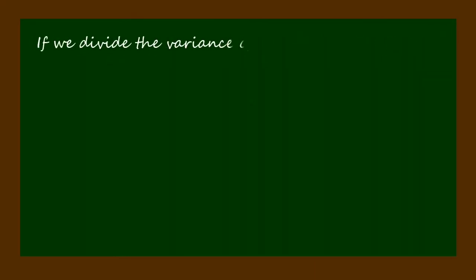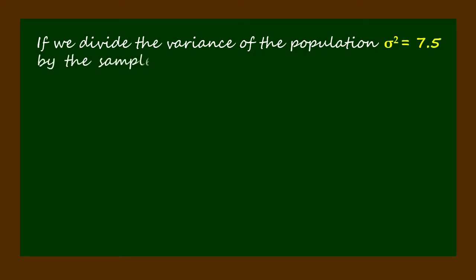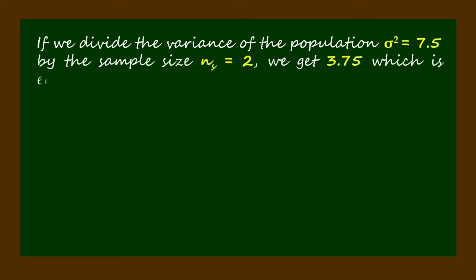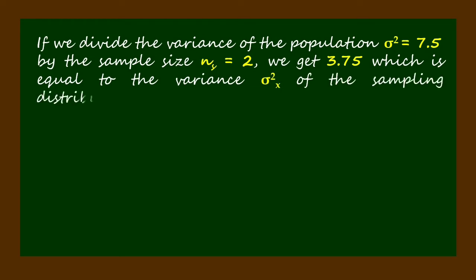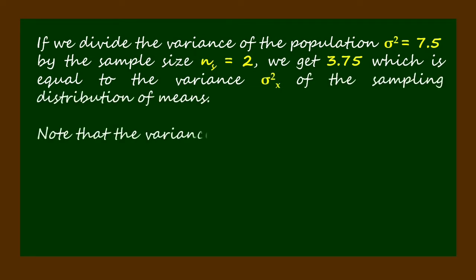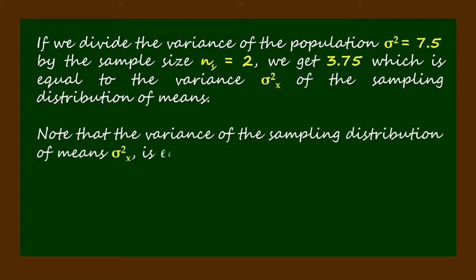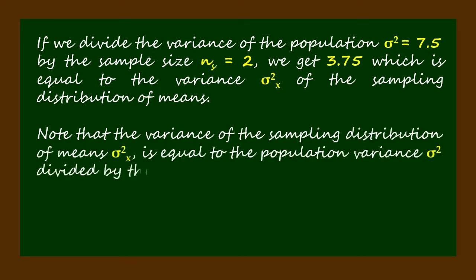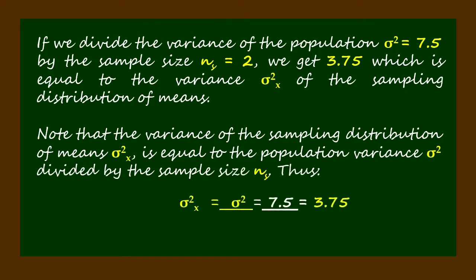If we divide the variance of the population, 7.5, by the sample size 2, we get 3.75, which is equal to the variance sigma squared sub x of the sampling distribution of means. Note that the variance of the sampling distribution of means sigma squared sub x is equal to the population variance sigma squared divided by the sample size n sub s.